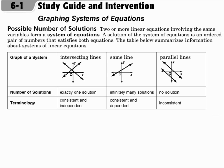If it's an overlapping line, there are infinitely many solutions, and that's called consistent and dependent. If the lines are parallel, they never intersect, so there's no solution, and that's called inconsistent.